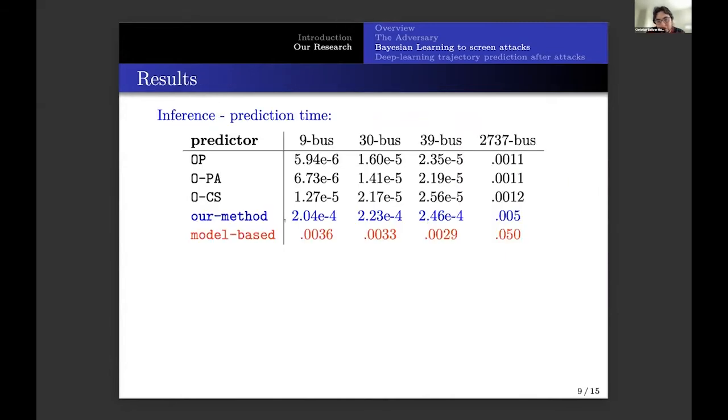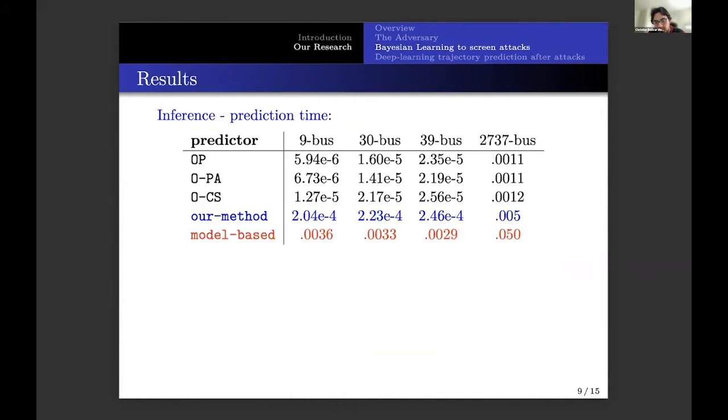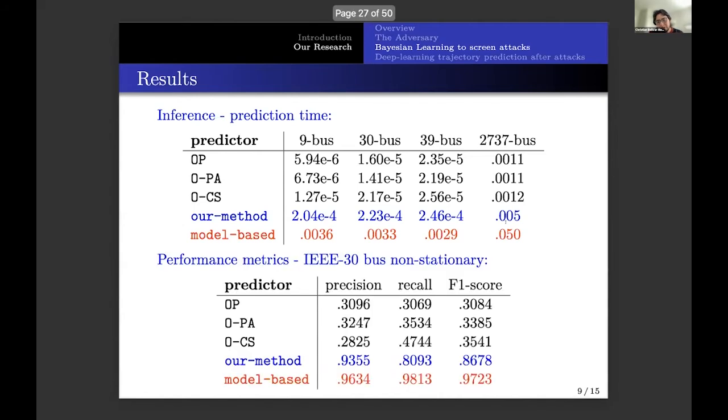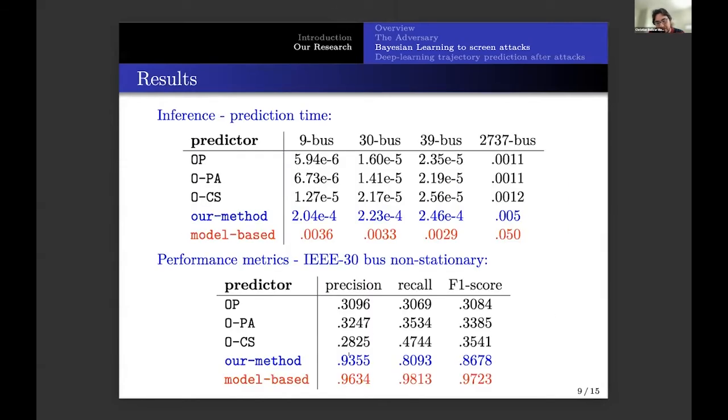Some results. So, essentially, with machine learning-based methods, what we obtain is we're usually faster. In this case, with a power grid, a very large power grid of 3000 buses, our method is 10 times faster than the method that will use standard numerical methods. And in terms of performance, even though our method is a very simple linear probabilistic model, we almost reach the same capacity, the same performance of the model-based methods.